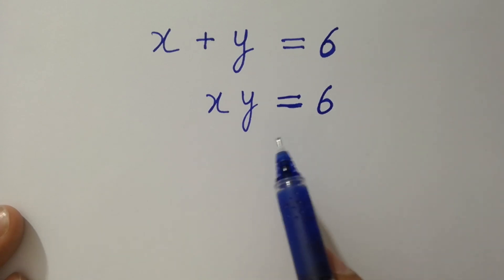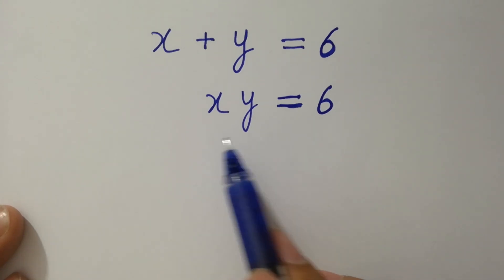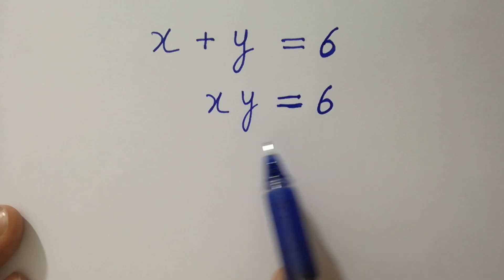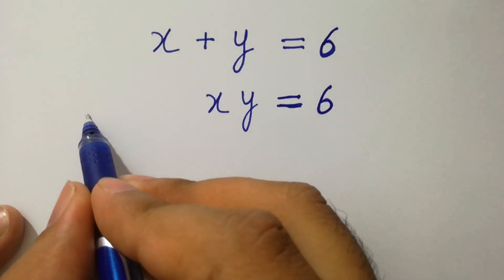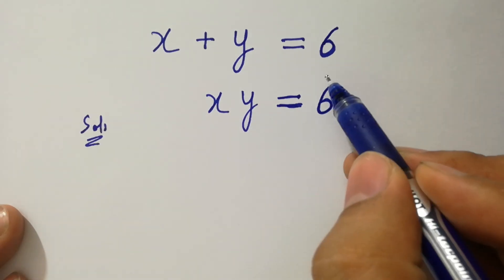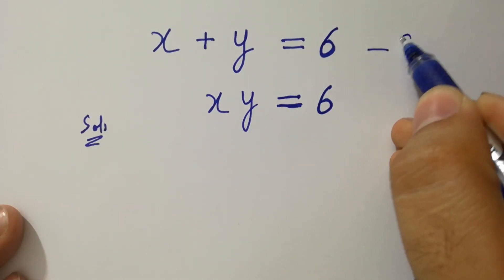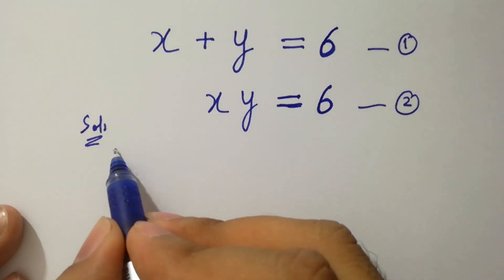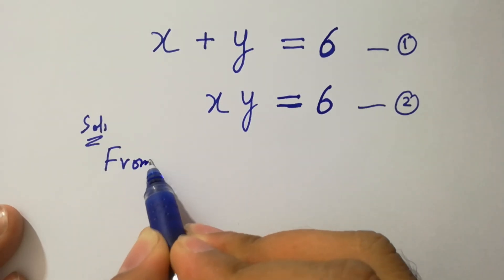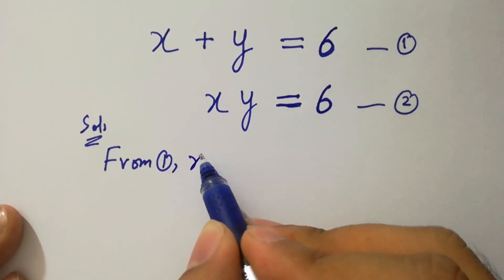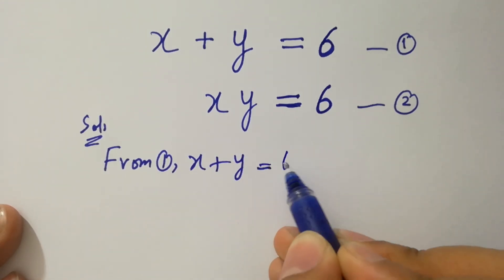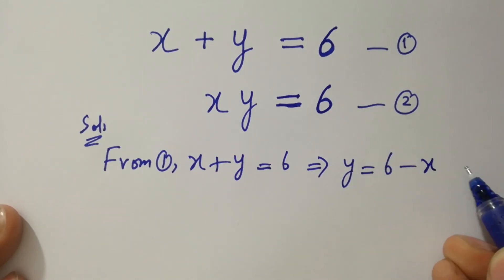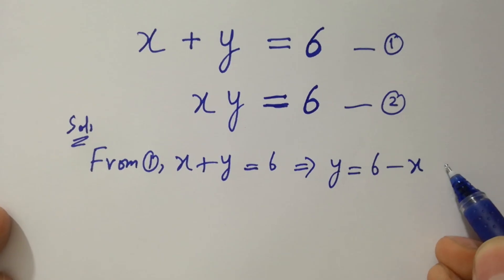Hello friends, find the value of x and y if x plus y equal to 6 and xy equal to 6. Let x plus y equal to 6 be the first equation and xy equal to 6 be the second equation. From the first equation, x plus y equal to 6, so y equal to 6 minus x — let's call this the third equation.